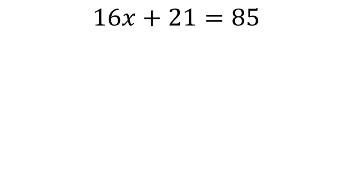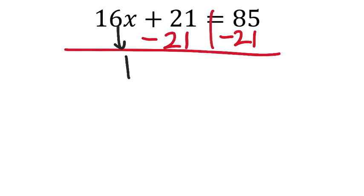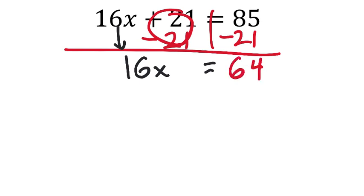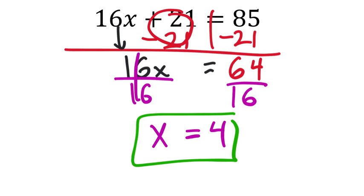Solving 16x + 21 = 85. Subtract 21 from both sides: 16x = 85 − 21 = 64. Then divide both sides by 16: x = 4. Checking: 16 × 4 = 64; 64 + 21 = 85. That checks off. x = 4.